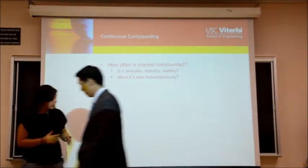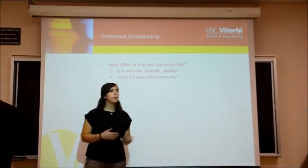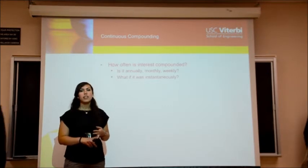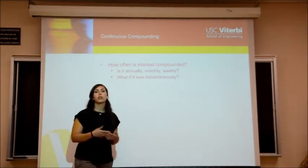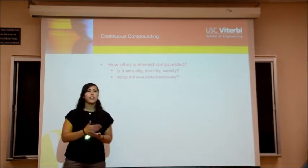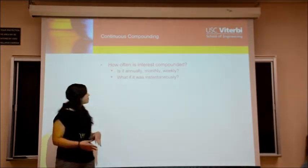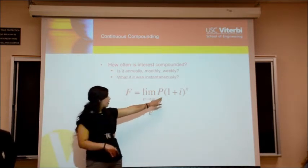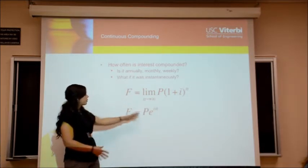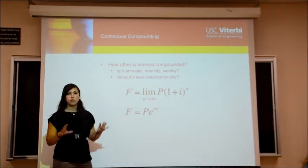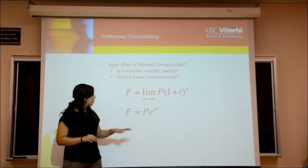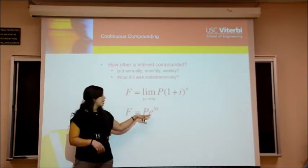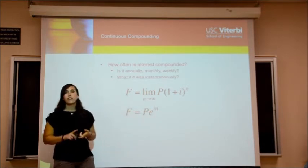Peter talked about effective interest rate versus nominal, but effective is really dependent on the number of sub-periods you divide into. We can do it annually, monthly, weekly, but what happens if the number of sub-periods is approaching infinity? What would happen if we were compounding instantaneously? This is our original equation for calculating future value given the present value. If we're taking the limit as n approaches infinity, we're going to get this equation. As we approach infinity, the future value equals the principal amount times e raised to the effective rate times the number of periods.